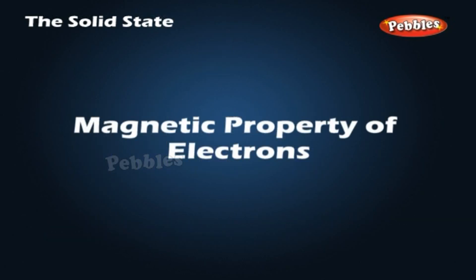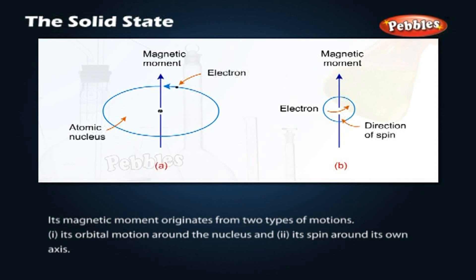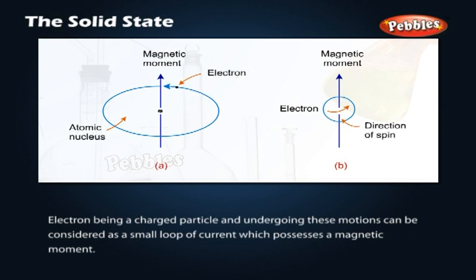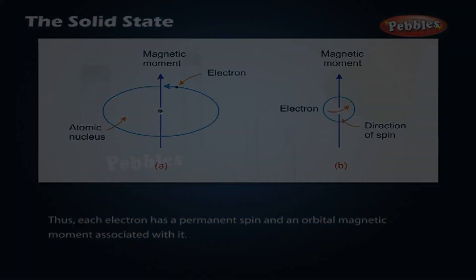Magnetic property of electrons. Every substance has some magnetic property associated with it, and the origin of these properties lies in the electrons. Each electron in an atom behaves like a tiny magnet. Its magnetic moment originates from two types of motions: its orbital motion around the nucleus, and its spin around its own axis. An electron, being a charged particle undergoing these motions, can be considered as a small loop of current which possesses a magnetic moment. Thus, each electron has a permanent spin and an orbital magnetic moment associated with it.